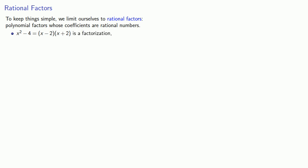To keep things simple, we'll limit ourselves to rational factors, polynomial factors whose coefficients are rational numbers. So if we write x squared minus 4 equals x minus 2 times x plus 2, this is a factorization, and all of its factors have rational coefficients.